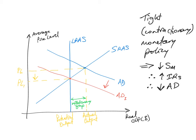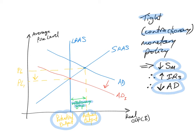Now, what if there is an inflationary gap, meaning the economy's actual output exceeds its potential output? The central bank would pursue a tight or contractionary monetary policy, decreasing the supply of money, which raises interest rates and therefore lowers aggregate demand. AD shifts from AD to AD1, which closes this inflationary gap and causes the price level to fall from PL to PL1. Closing this inflationary gap will lower the average price level; however, there will be a slight rise in unemployment and a slowing down of economic growth. This is according to the neoclassical model.